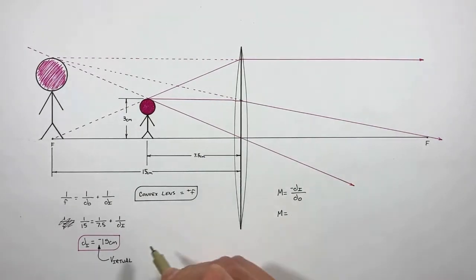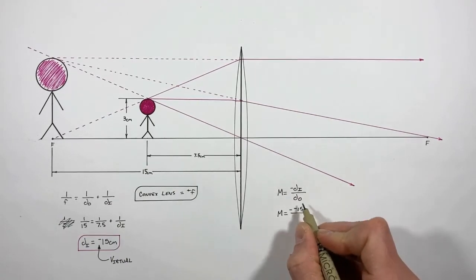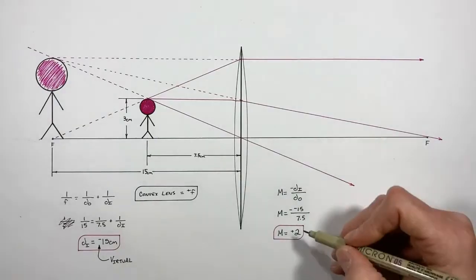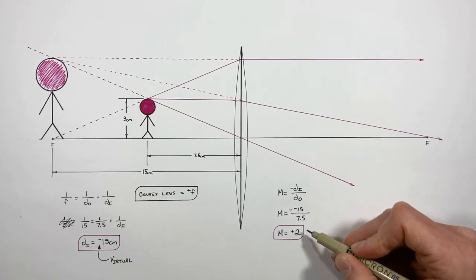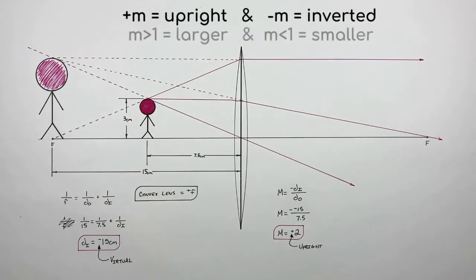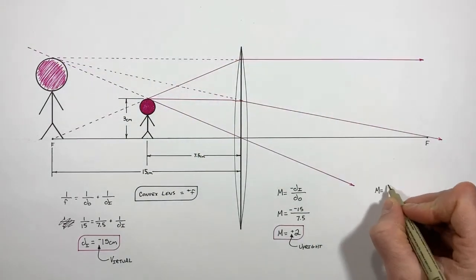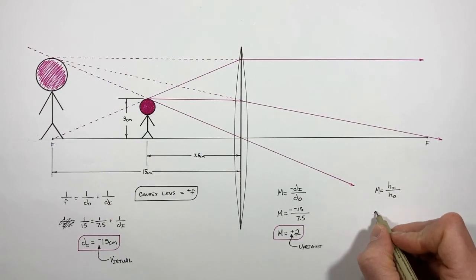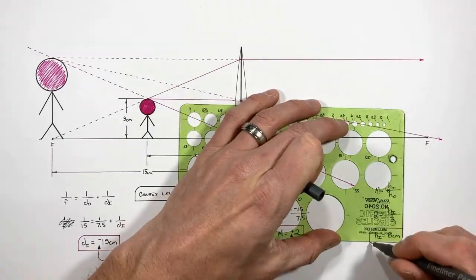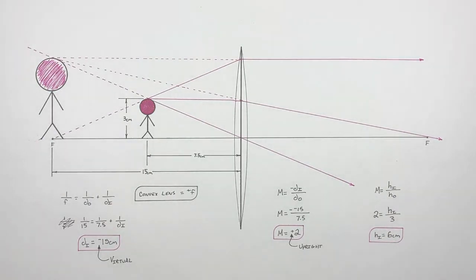Next, let's solve for the magnification. The magnification equals the negative of the image distance over the object distance: negative negative 15 over 7.5, which works out to positive 2. Because this is positive, the image is upright. Finally, the image height equals the magnification times the object height — 2 times 3 centimeters — giving us an image height of 6 centimeters.